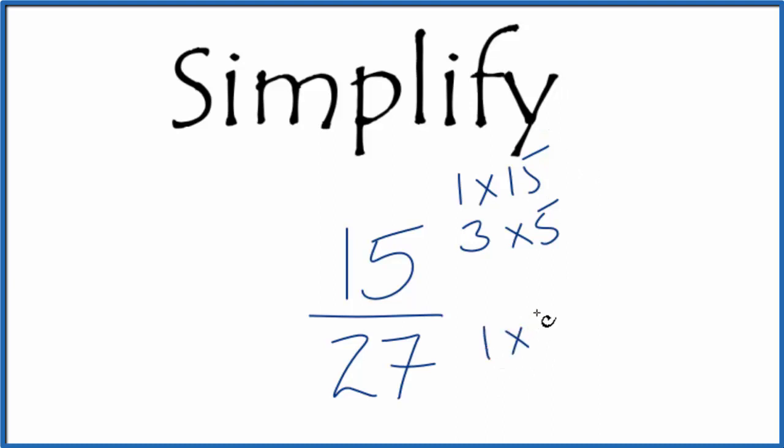For 27, we'd have 1 times 27, 3 times 9, and I think these are the only multiples for 27. So we see the common multiple, the one that's both in the numerator and the denominator, we have 3.